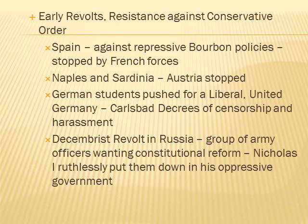Early revolts against the conservative order: in Spain, a revolt against repressive Bourbon policies was stopped by French forces. In Naples and Sardinia, a revolt was stopped by Austria. German students pushing for a liberal united Germany were suppressed by the Carlsbad Decrees of censorship and harassment. The Decembrist revolt in Russia — a group of army officers wanting constitutional reform — was put down ruthlessly by Nicholas I and his oppressive government.